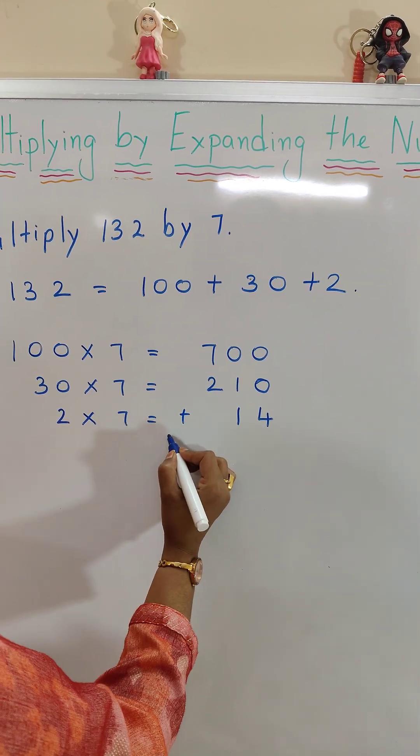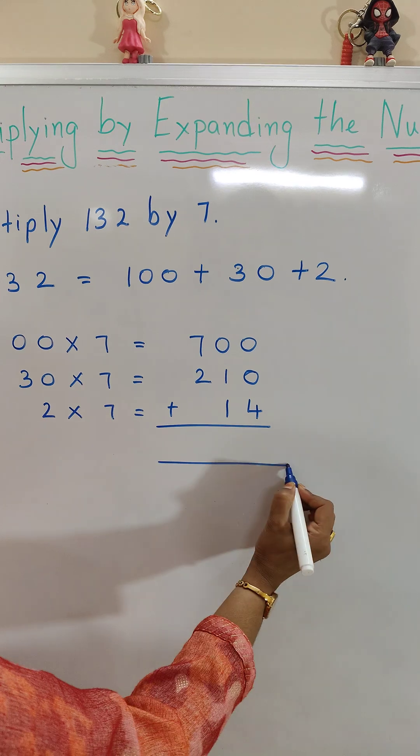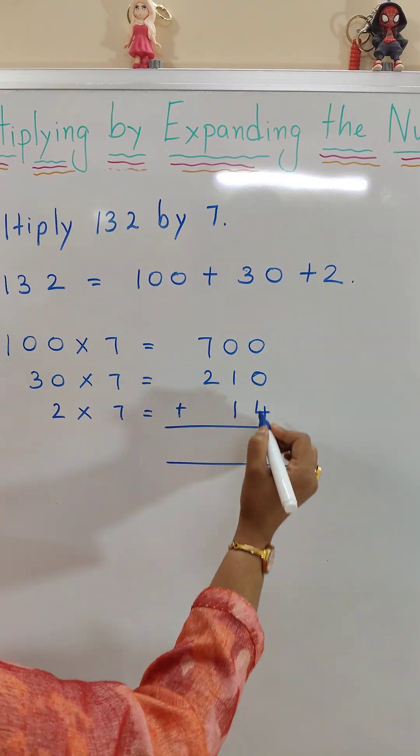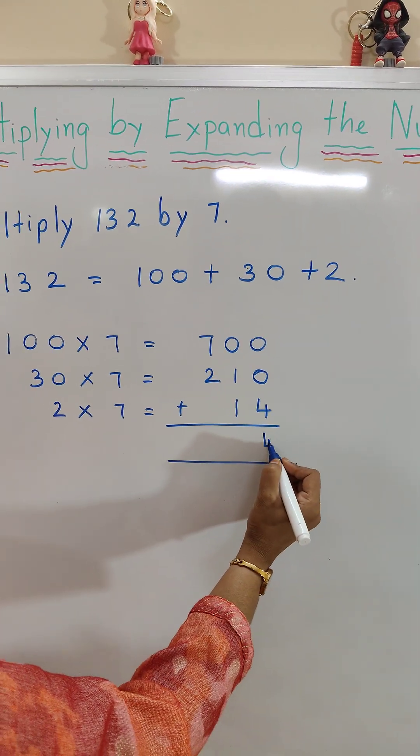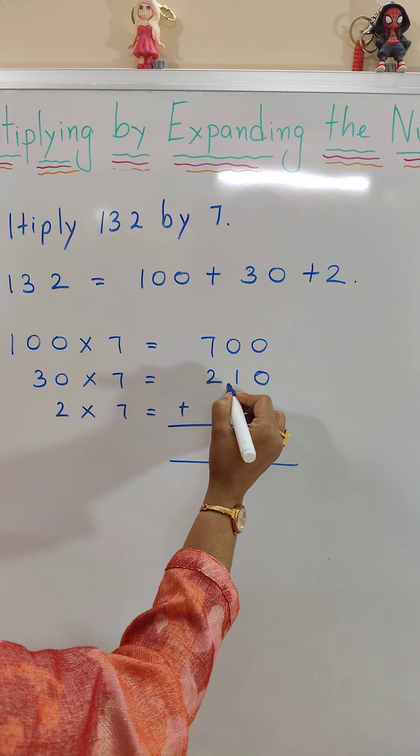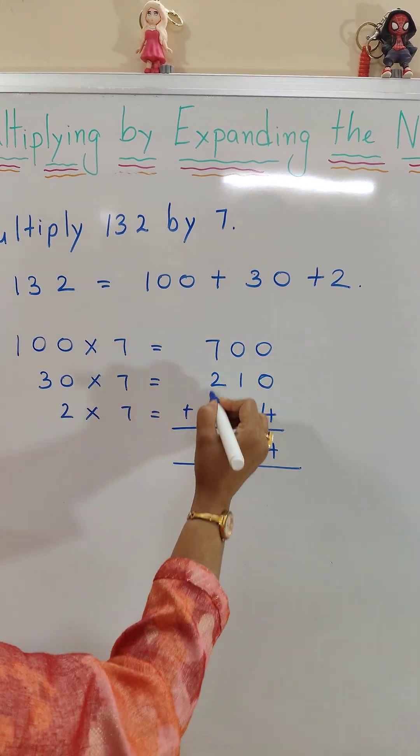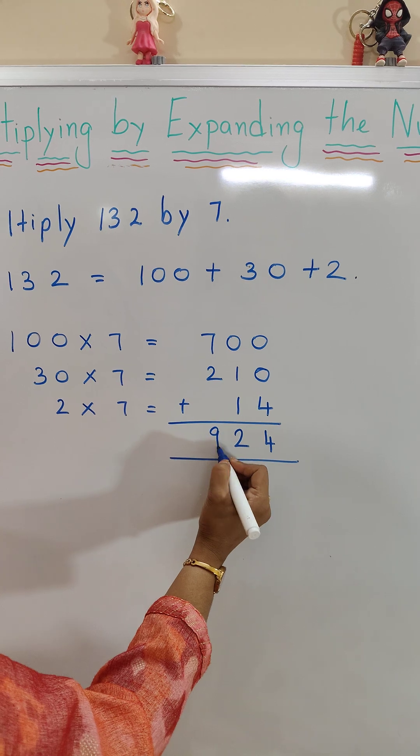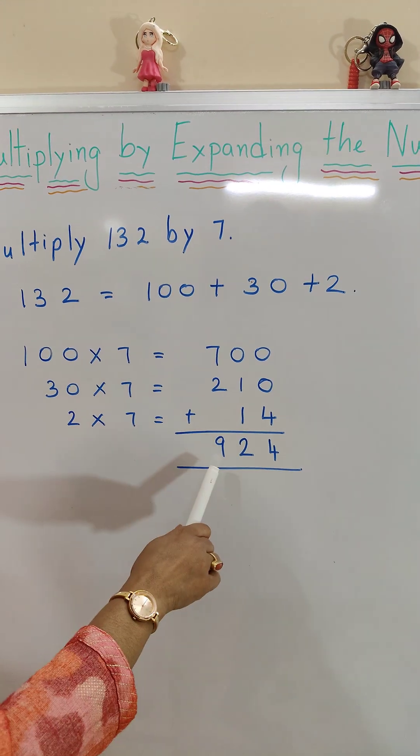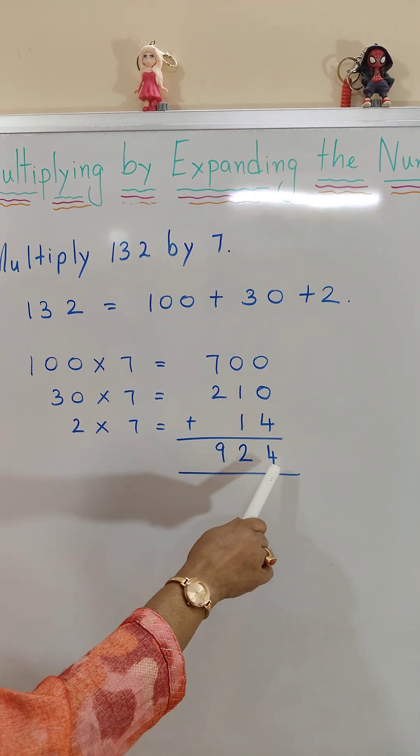Now we will add all these three numbers. 0 plus 0 plus 4 is equal to 4. 0 plus 1, 1. 1 plus 1, 2. 7 plus 2, 9. So our answer is 924.